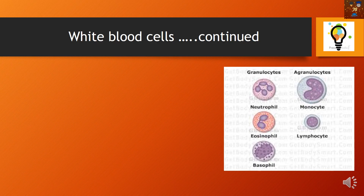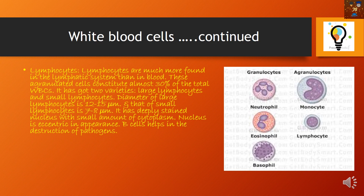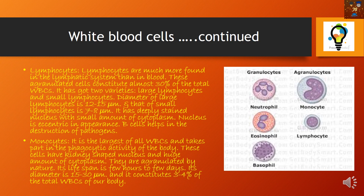The agranulocytes are of two types: monocytes and lymphocytes. Lymphocytes have an almost round-shaped nucleus, while monocytes have a kidney-shaped or bean-shaped nucleus. These cells form the defense mechanism of our body, which is very important.